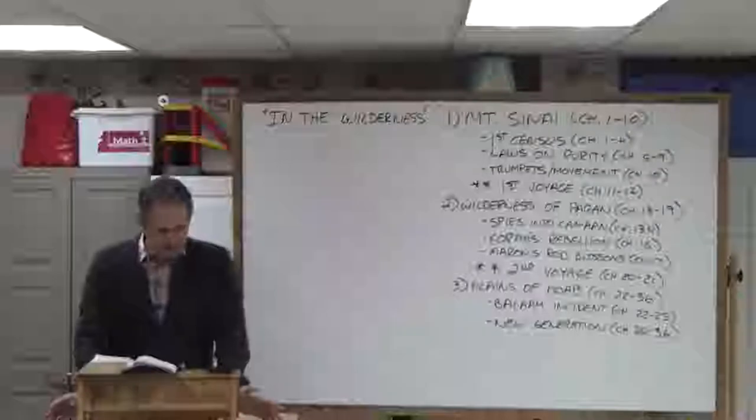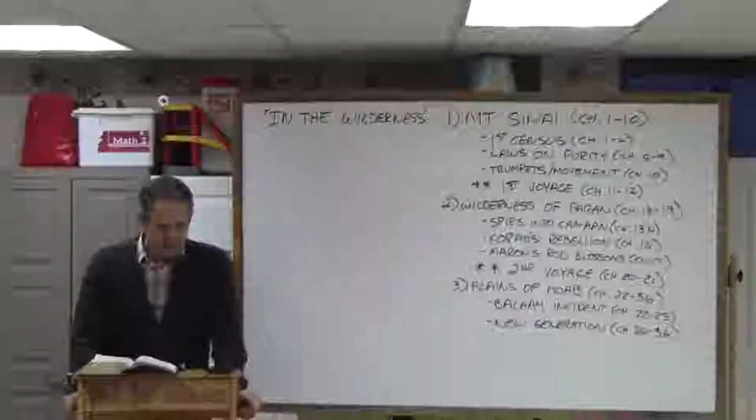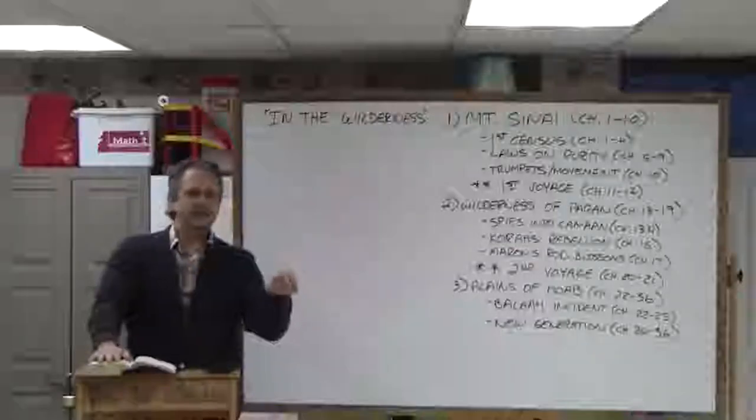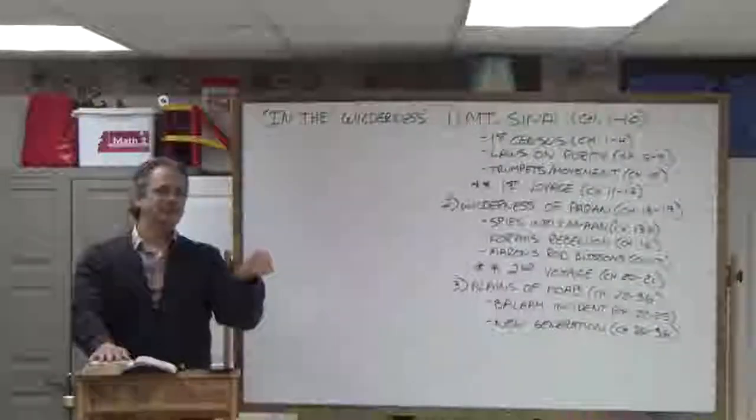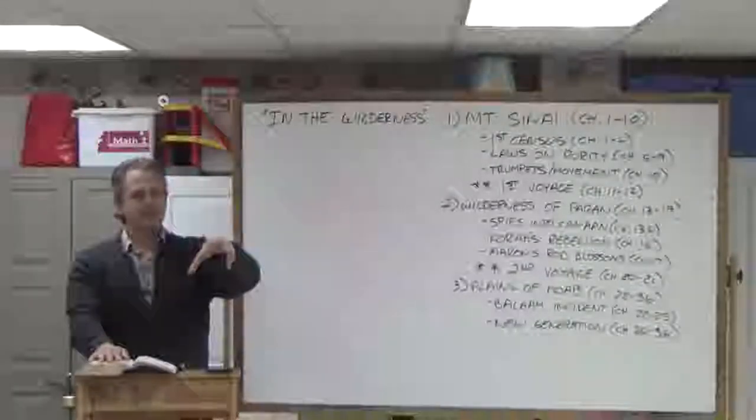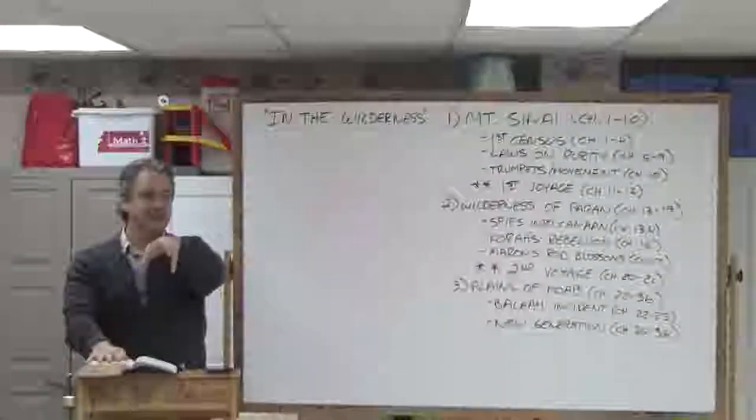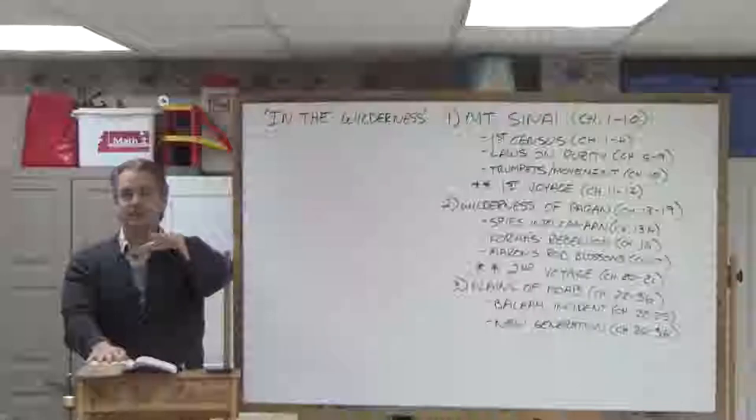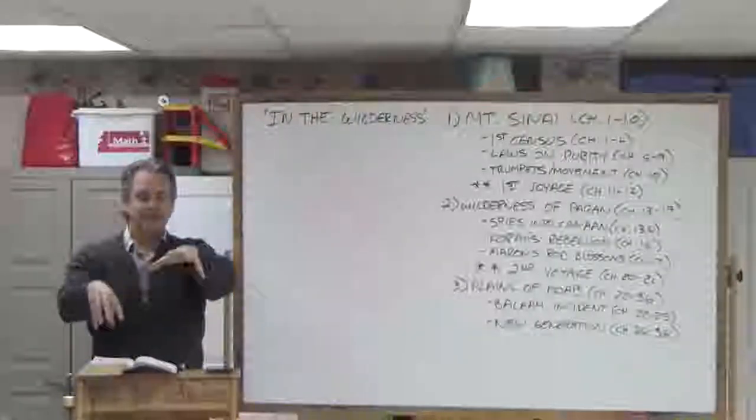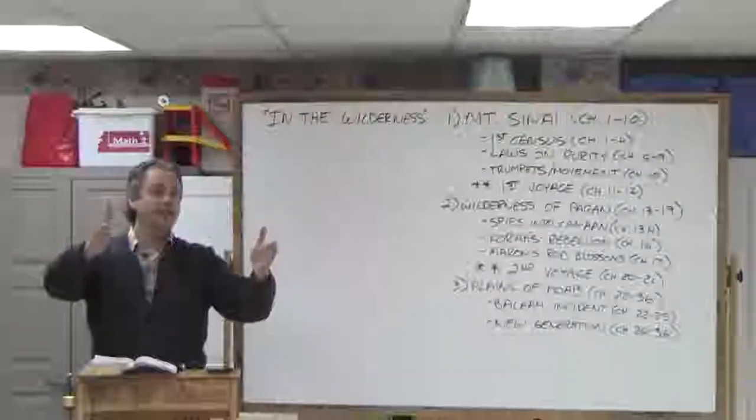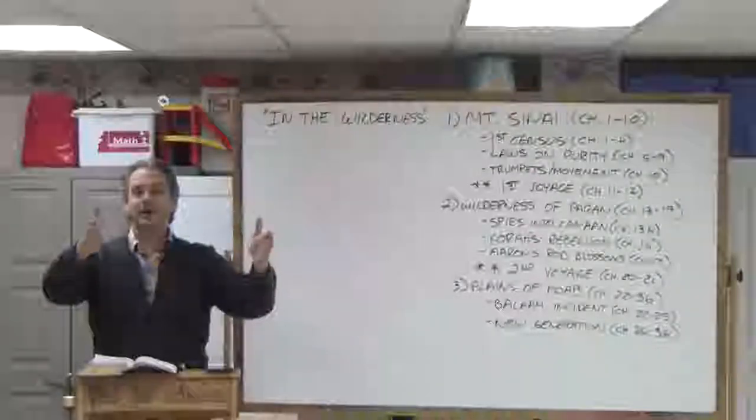Some of the highlights that we'll hit real quick. The distance that they travel - if you remember, in Genesis we left off in Goshen, and then in Exodus we're in Goshen, and we exodus out of Goshen and we go to Mount Sinai. In Leviticus we stay in Mount Sinai, and in Numbers we're still in Mount Sinai. So they spend one year camping out at Mount Sinai.